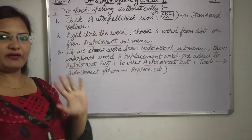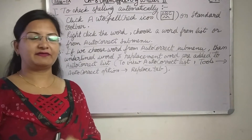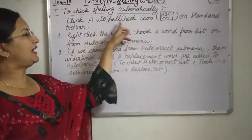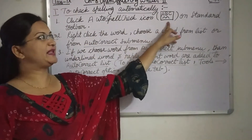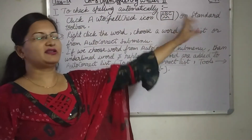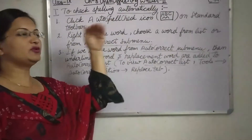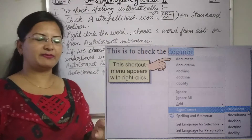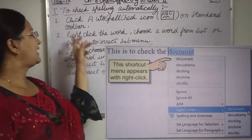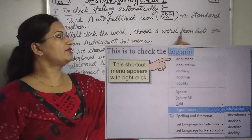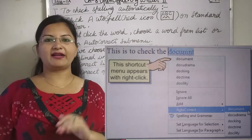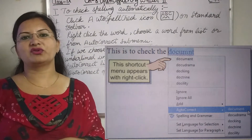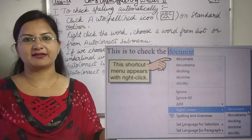I have told you two ways to check spelling. First is auto spell check — click the auto spell check icon on the standard toolbar. You can see there is a red wavy line where a mistake exists. Right-click on the word with the red wavy line, and a sub-menu will appear with a list of suggested words. Choose the correct word directly from that sub-menu.